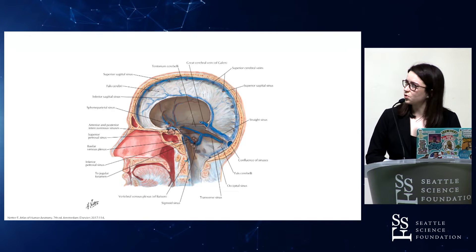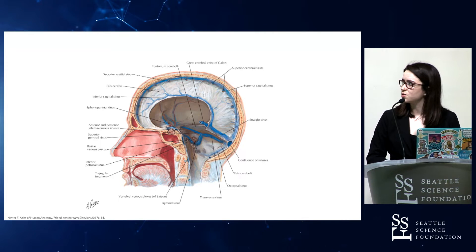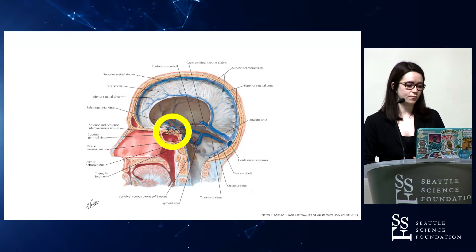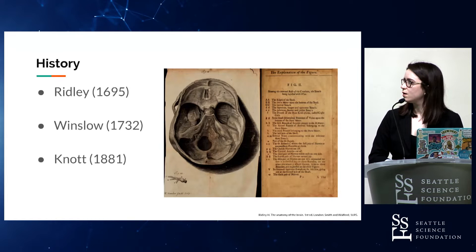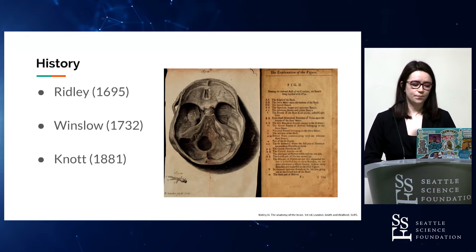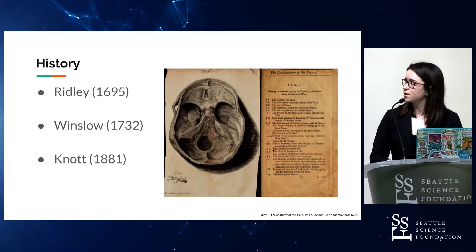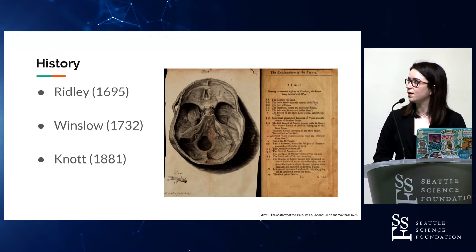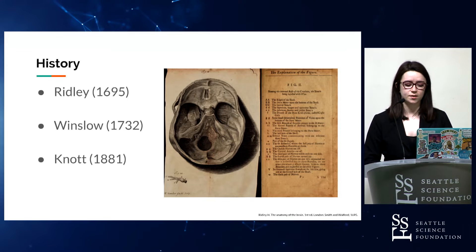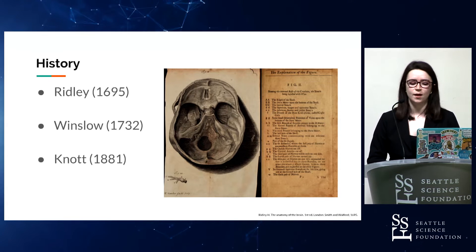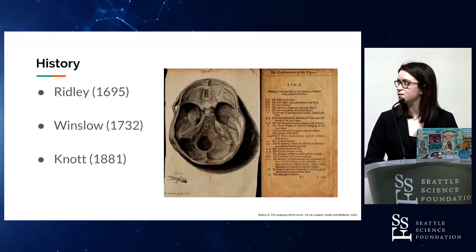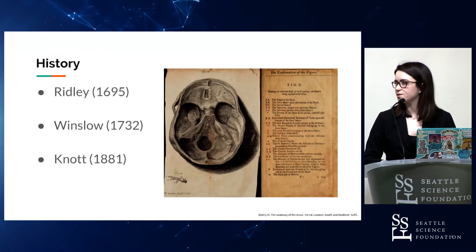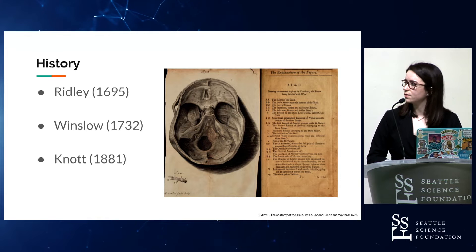This is a broad image of the venous structures within the cranium, and we'll be focusing on this region here in the pituitary region. Jumping into the history: in 1695, Ridley was the first anatomist to mention communicating venous connections around the pituitary and dubbed those as the circular sinus, which is what today we would know as the anterior and posterior intercavernous sinuses. This image is actually from Ridley's book from 1695, illustrating the cranial base.